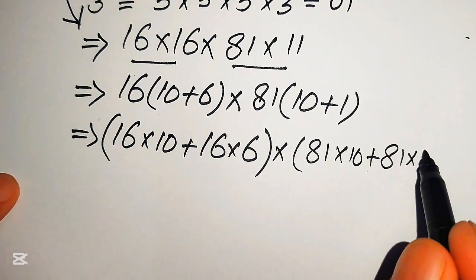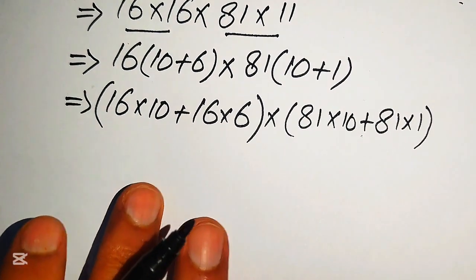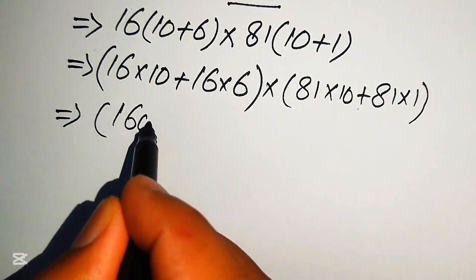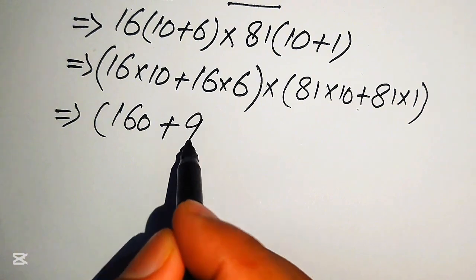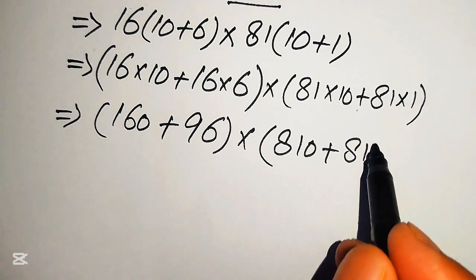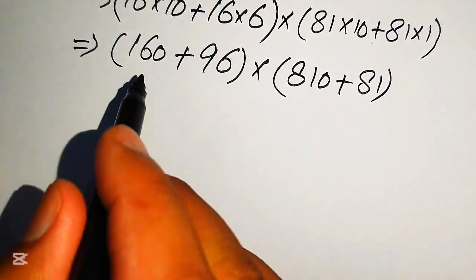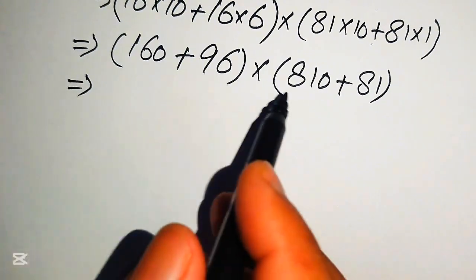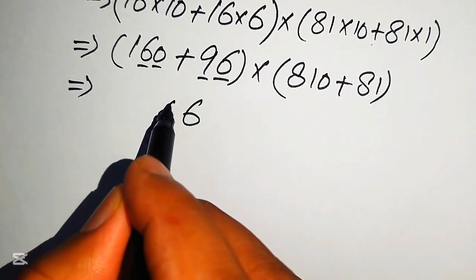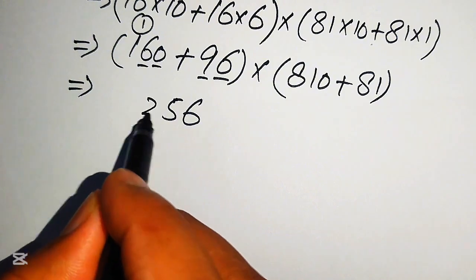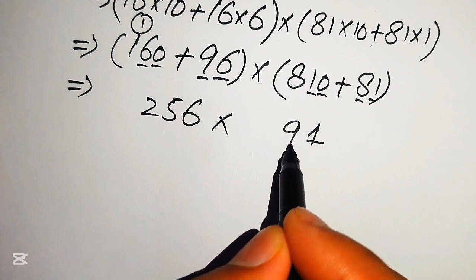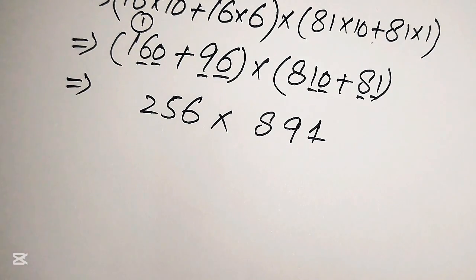We also compute 81 multiplied by 10 plus 81 multiplied by 1. Working these out: 16 times 10 is 160, 6 times 16 is 96, 81 times 10 is 810, and 81 times 1 is 81. Adding 160 and 96 gives 256, and adding 810 and 81 gives 891.